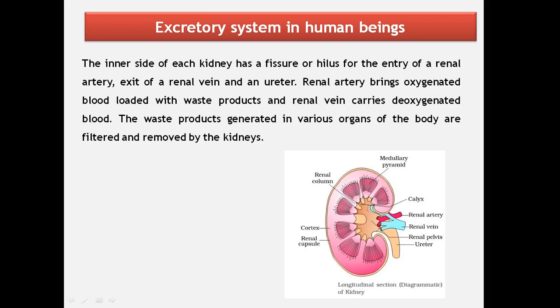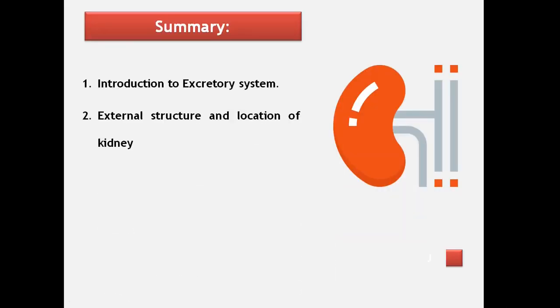After the processes take place in the kidneys, deoxygenated blood without nitrogenous wastes comes out through the renal vein. We will learn about the ureter, urethra, urinary bladder and other parts in our next session. Today we have studied why excretion is important in organisms and the external structure and location of kidneys in human beings.